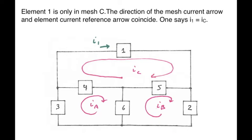Element 1 is only in mesh C, and the direction of the mesh current arrow, I sub C, and the element current reference arrow, I sub 1, coincides. One says that I1 is equal to IC. The element current, I1, is equal to the mesh current, IC.